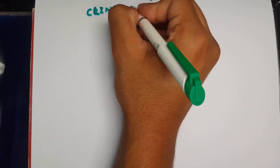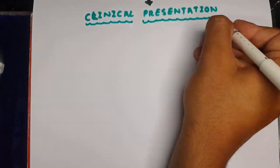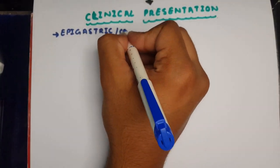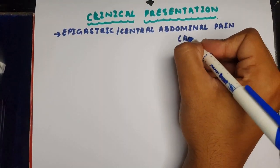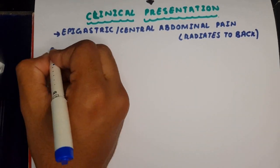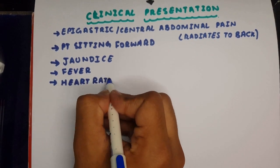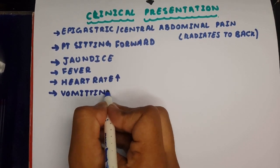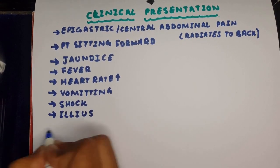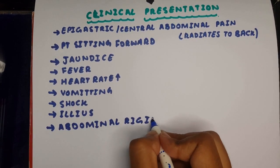The typical presentation is with severe, constant upper abdominal pain of increasing intensity over 15-60 minutes, which radiates to the back and the patient will be sitting forward. Nausea and vomiting are common, and the patient may also present with shock and abdominal rigidity due to peritonitis.